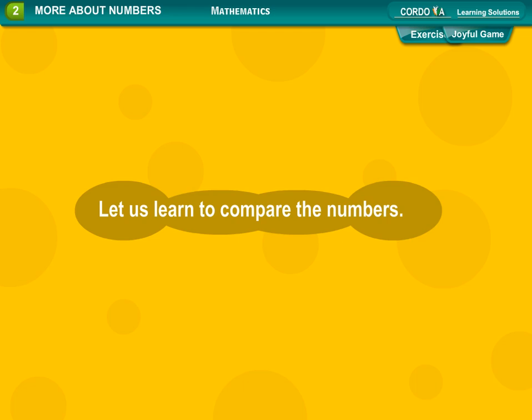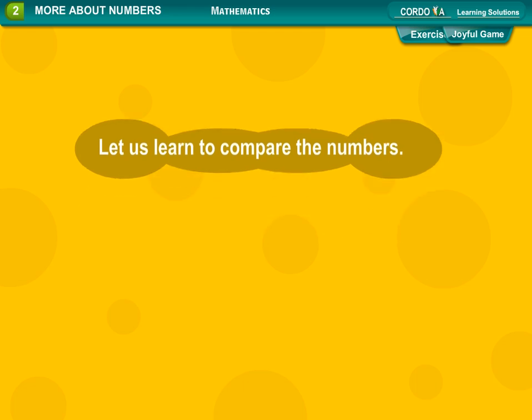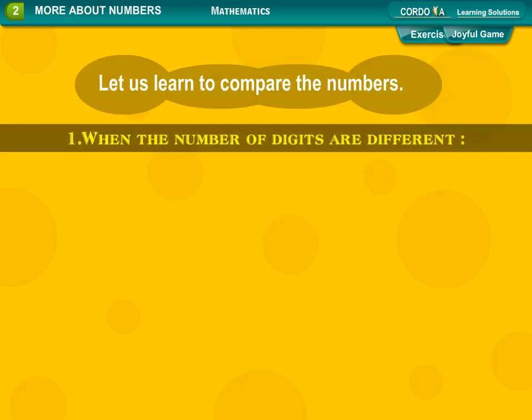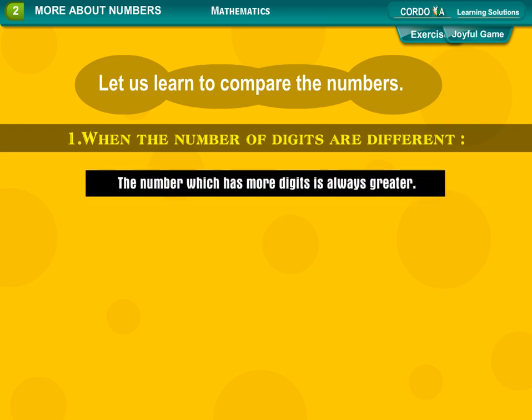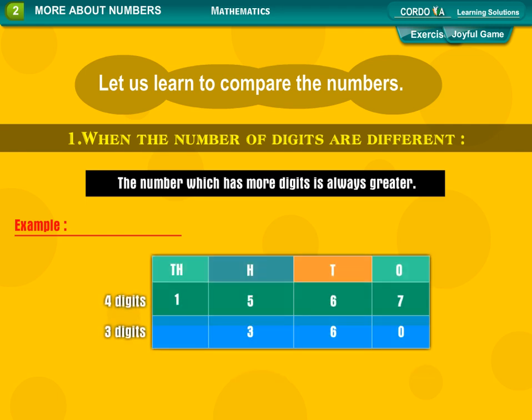Let us learn to compare the numbers. When the number of digits are different, the number which has more digits is always greater. Example: TH, H, T, O. 4 digits: 1,567. 3 digits: 360. So 1,567 is more than 360.